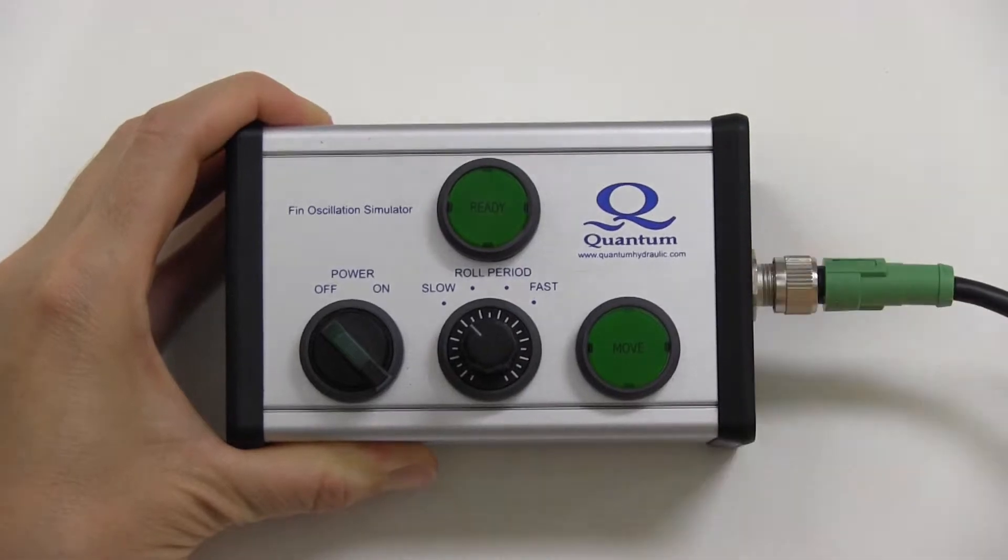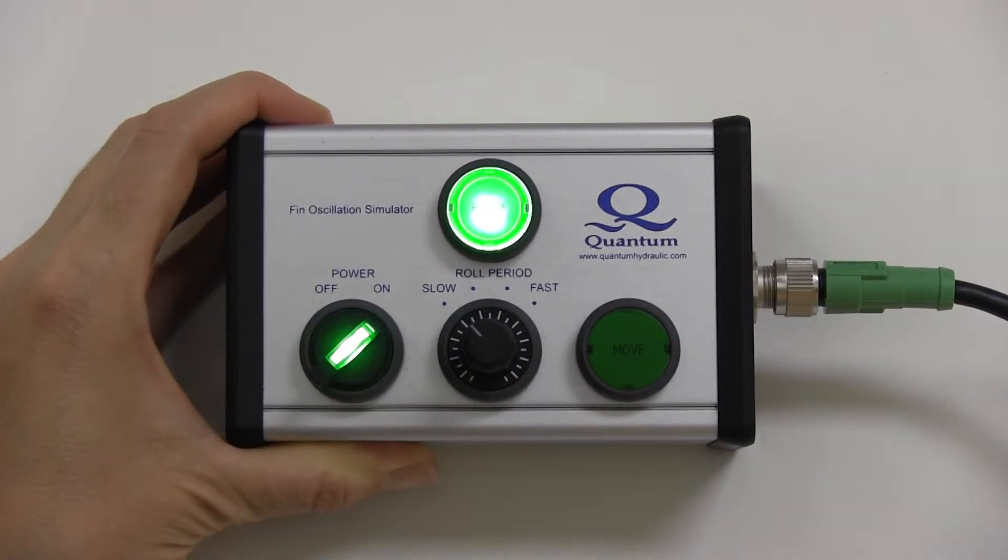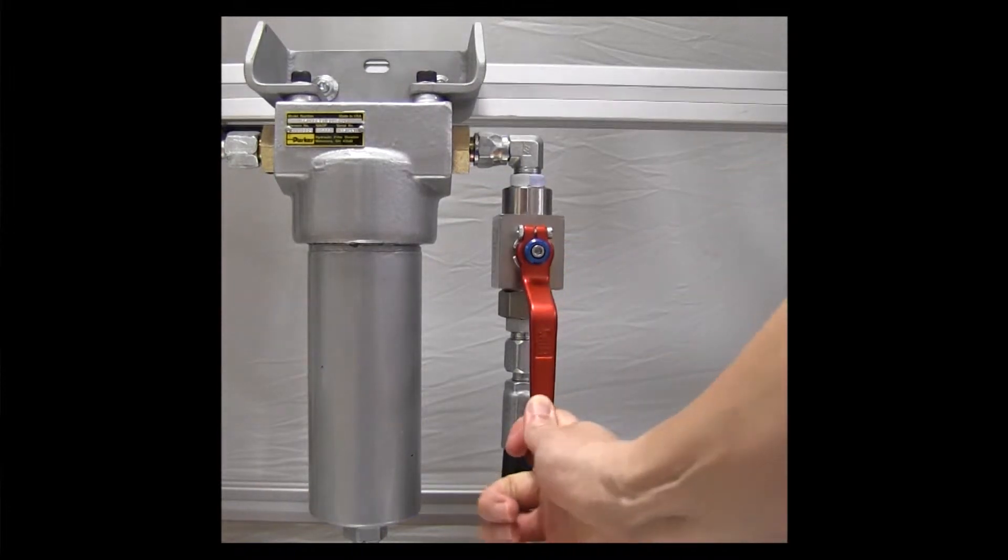Turn the power switch on the FIN Oscillation Simulator to the ON position. The power switch and ready indicator will illuminate when power is ON. Then slowly open the hydraulic isolation valves.